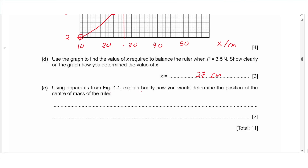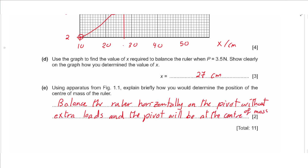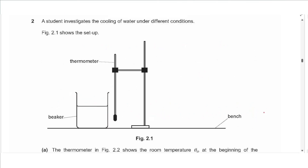Part e says, using the apparatus from figure 1.1, explain briefly how you would determine the position of the center of mass of the ruler. We say that we can balance the ruler horizontally on the pivot without extra loads, and the pivot will be at the center of mass, so we can use the pivot as a pointer.